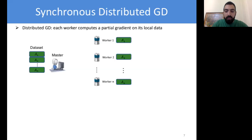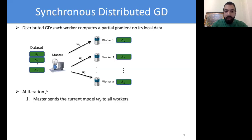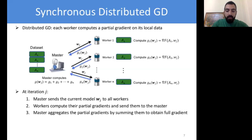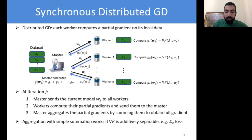To understand how gradient descent works in the distributed setting, assume data is partitioned across workers and we want to run distributed GD. At iteration J, the master sends the latest model W_J to all workers. The workers compute the partial gradients G1, G2, up to Gn on their local data and send them to the master. The master obtains the full gradient by summing up the partial gradients — this works when the gradient is additively separable, for example with the L2 loss function. This setting suffers from stragglers, since the master needs to wait for all workers and is therefore as fast as the slowest worker.